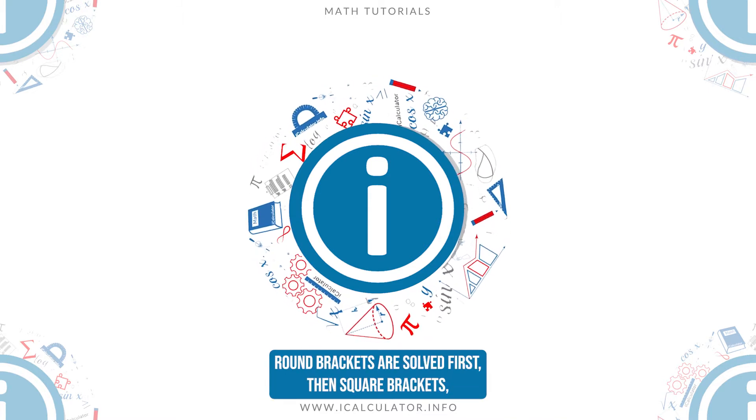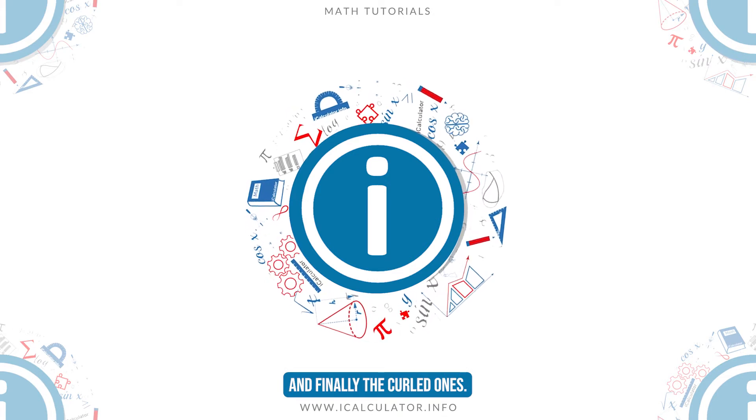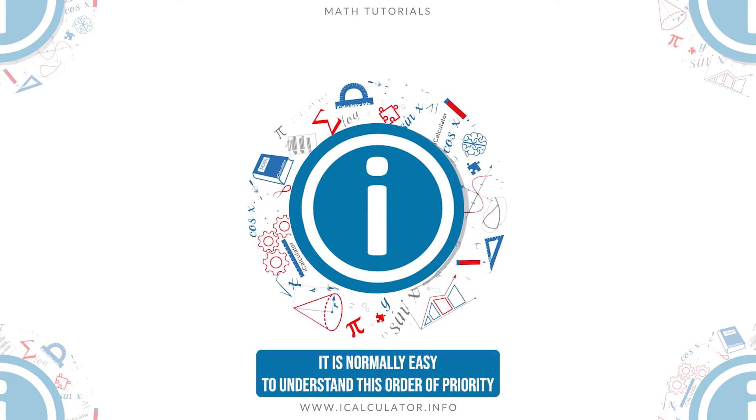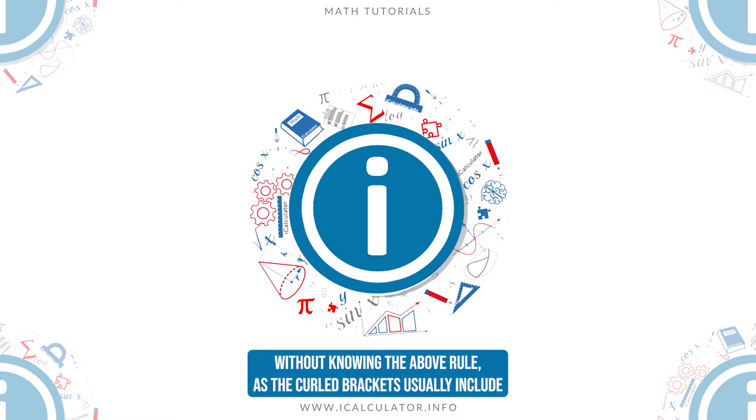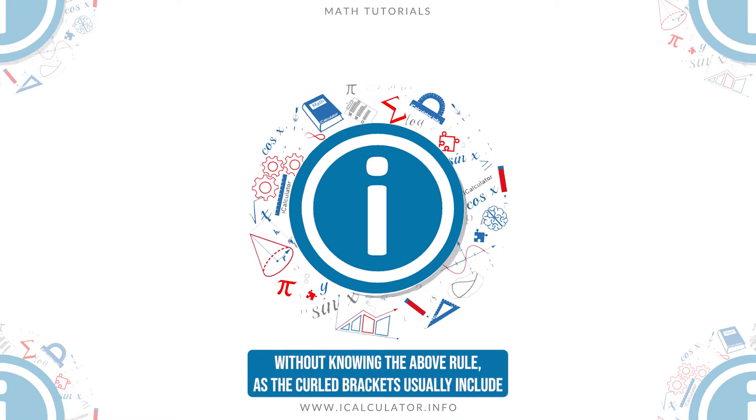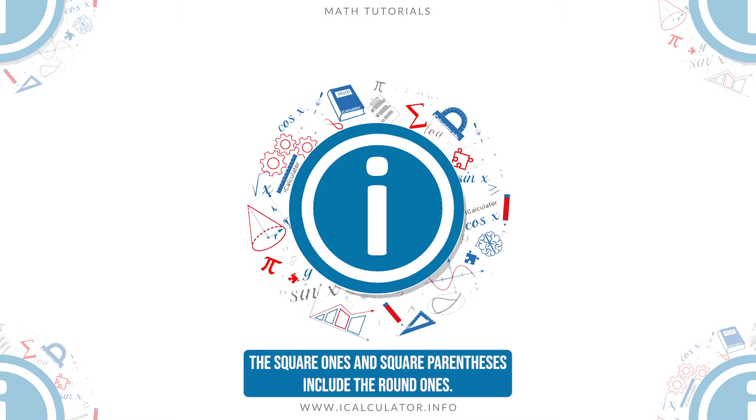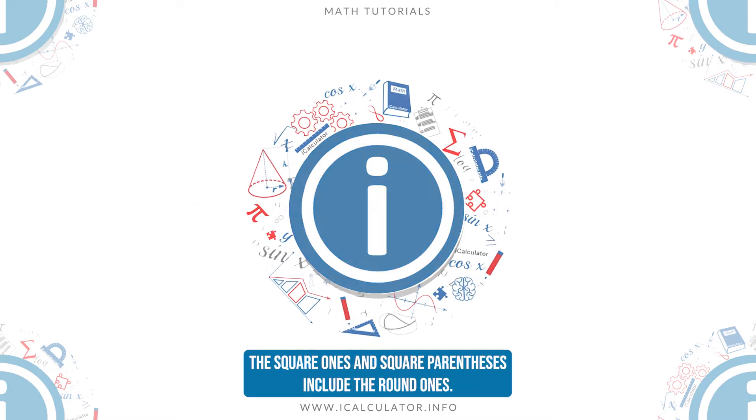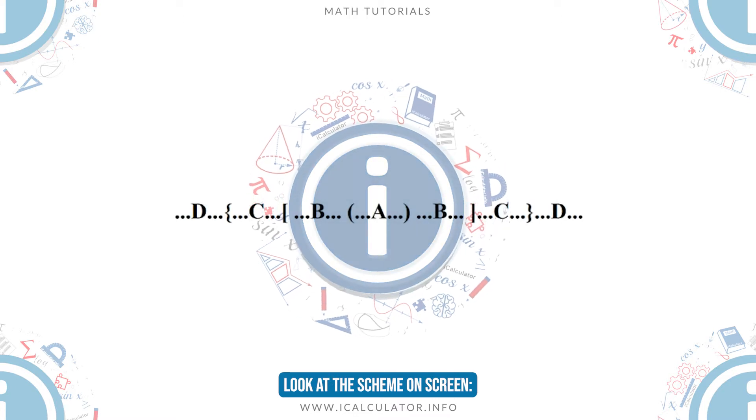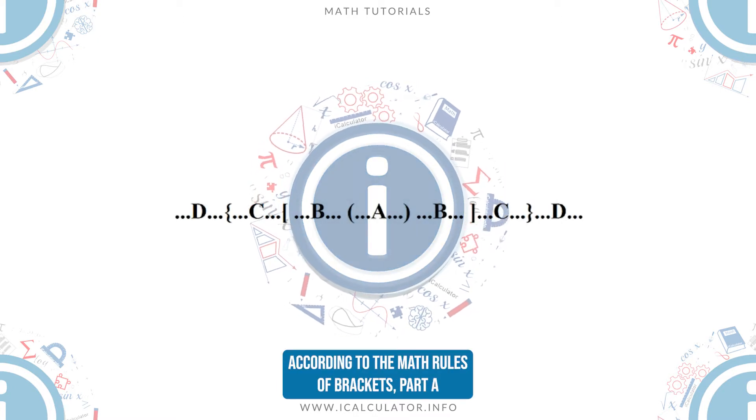It is normally easy to understand this order of priority without knowing the above rule as the curled brackets usually include the square ones and square parentheses include the round ones. Look at the scheme on screen, according to the math rules of brackets.